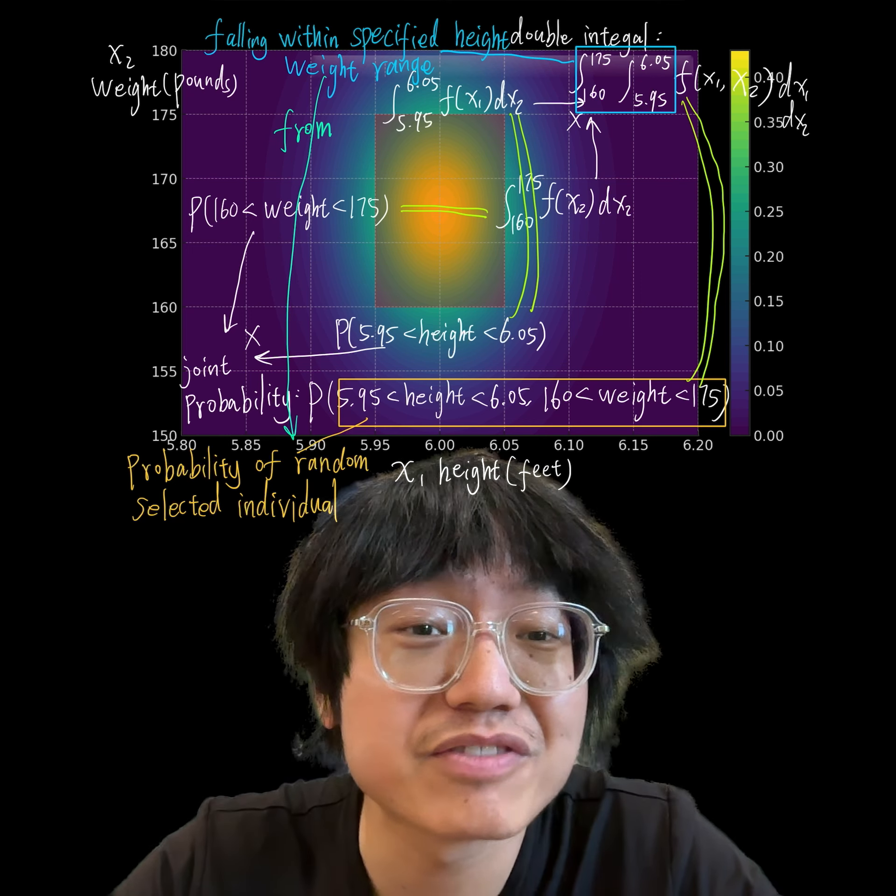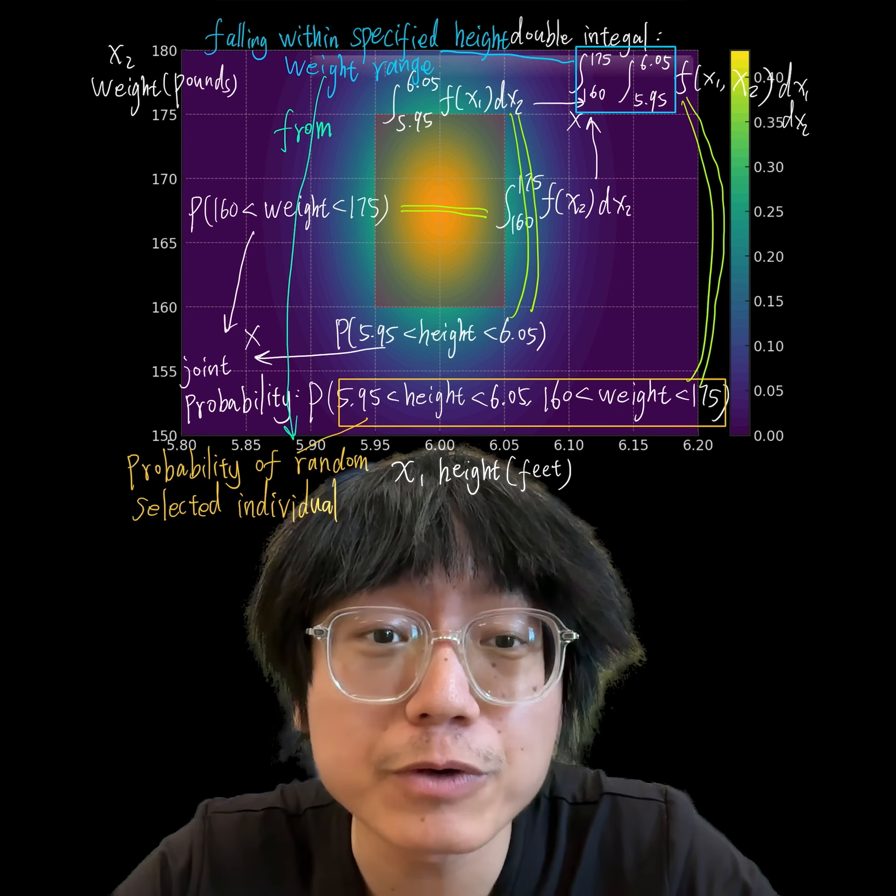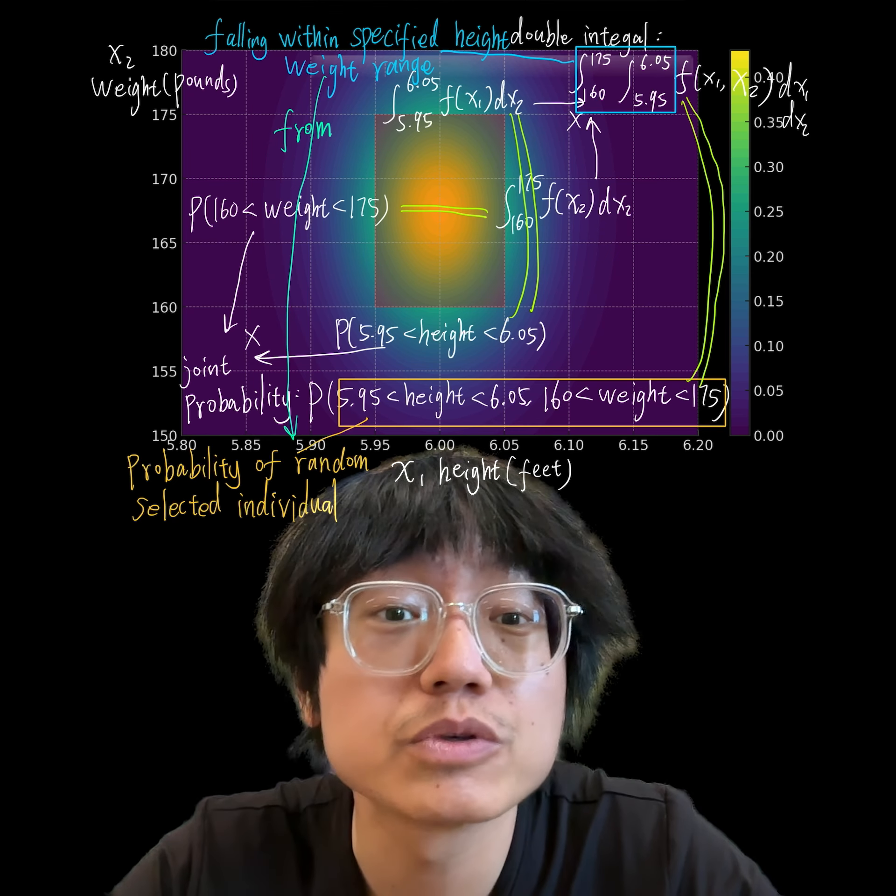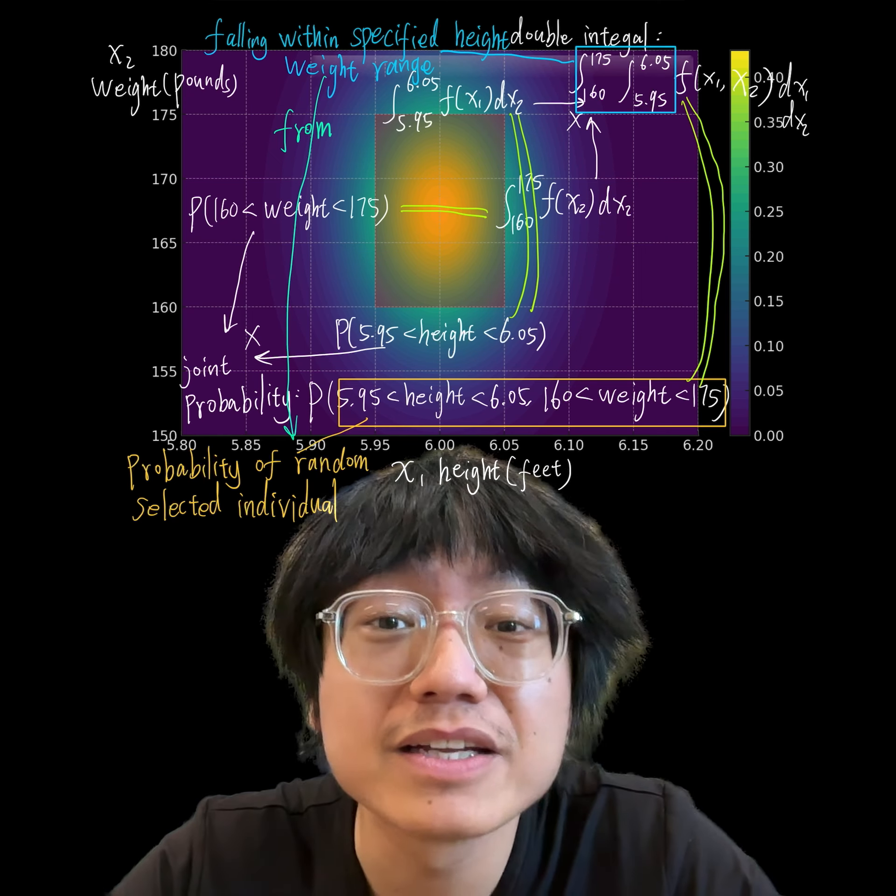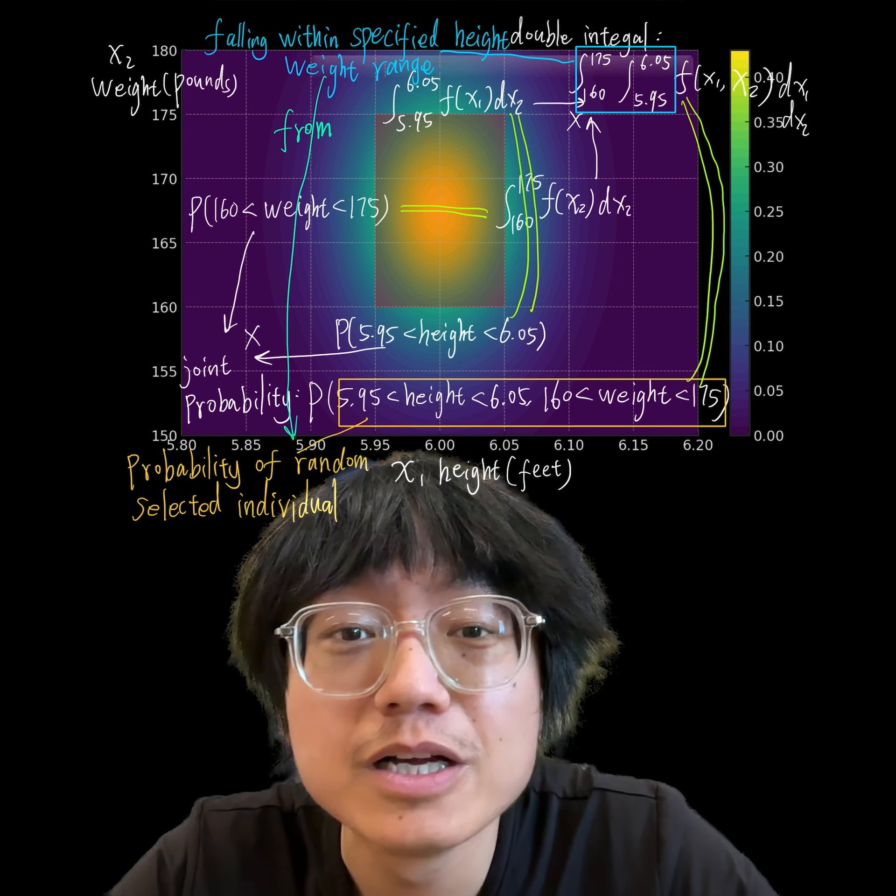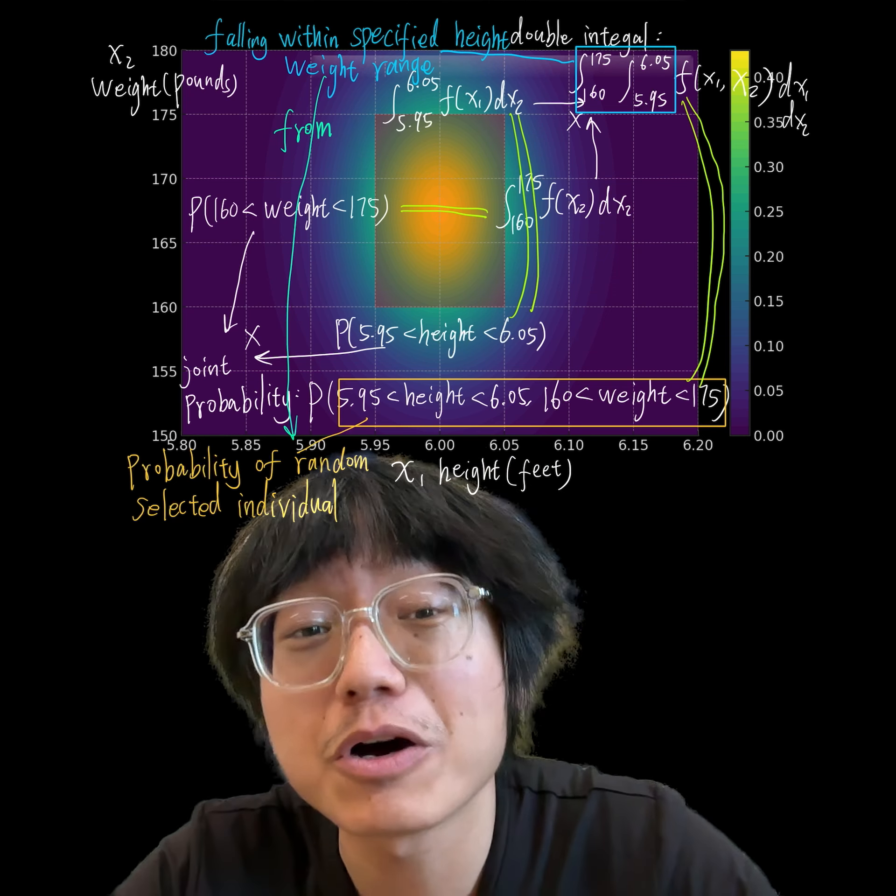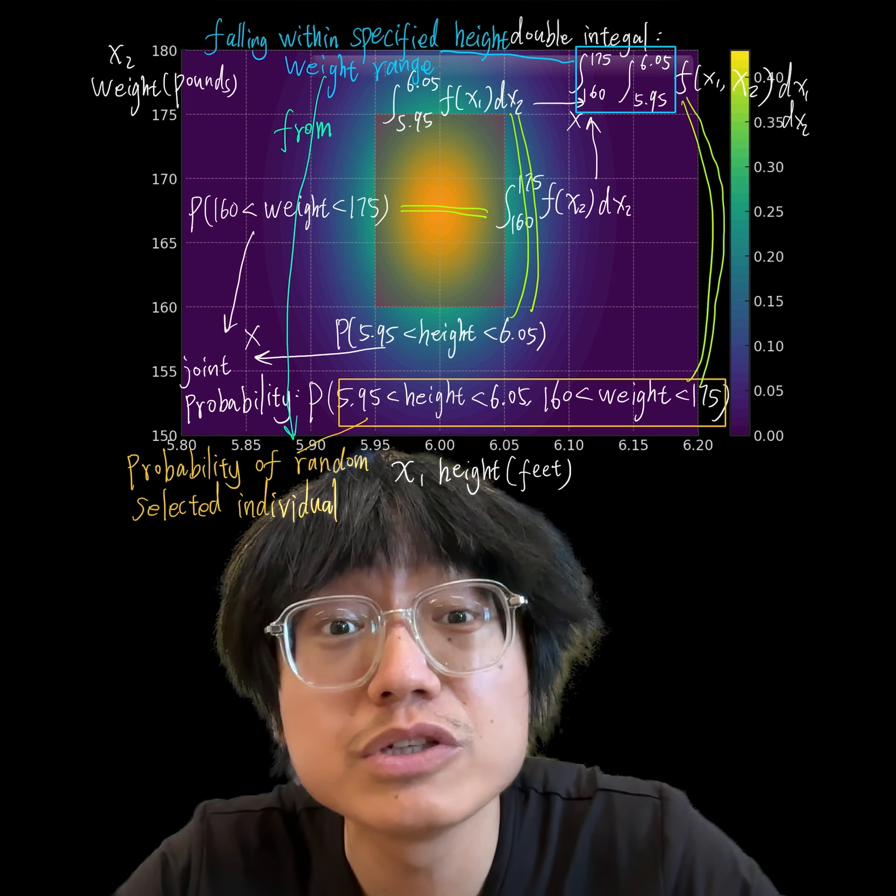This integration provides the total probability mass in the defined height and weight range by accumulating the density values within this area of interest. So this visualization and integral calculation together provide a comprehensive view of how joint probabilities are modeled and computed for continuous variables in two dimensions.